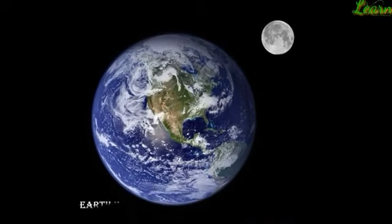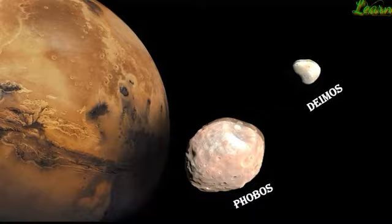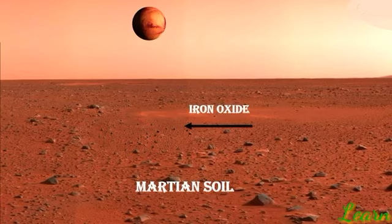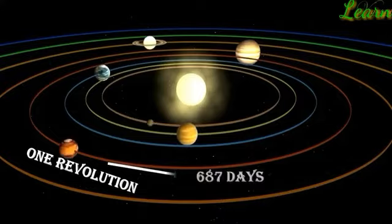Earth has only one natural satellite, the moon. The red planet Mars has two moons, Phobos and Deimos. The Martian soil contains a large amount of iron oxide, which gives it a reddish appearance. Mars completes one revolution around the sun in 687 days.